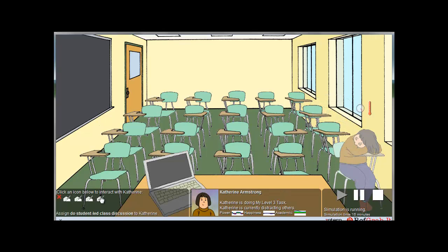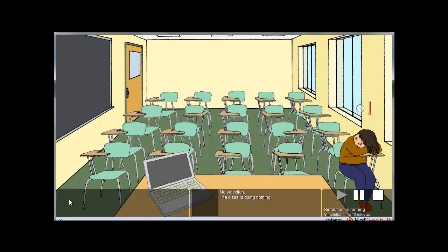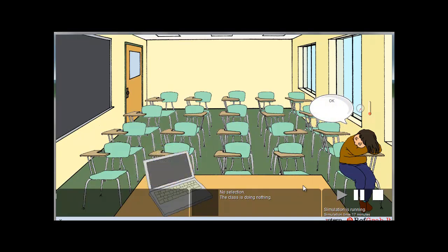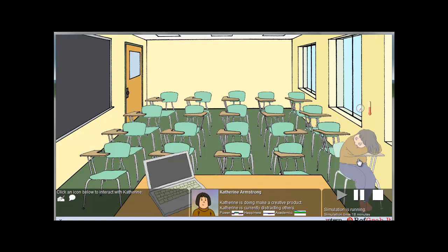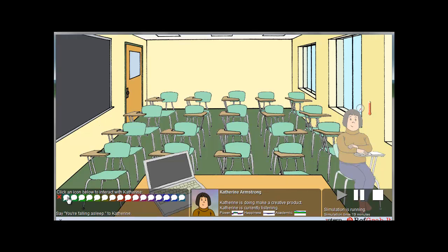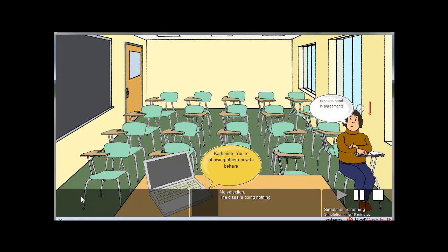I'm going to try one more — let's do a Level 4 task. How about a creative product? That should be fun. She's still distracting others, but maybe she's going to pay attention now. I'm going to say something nice: 'You're showing others how to behave.' And I'm going to stop the simulation here.